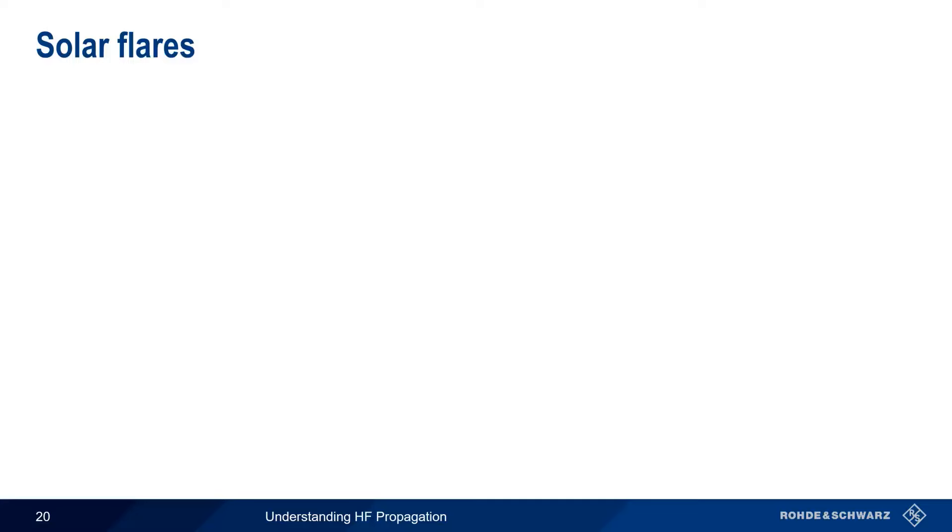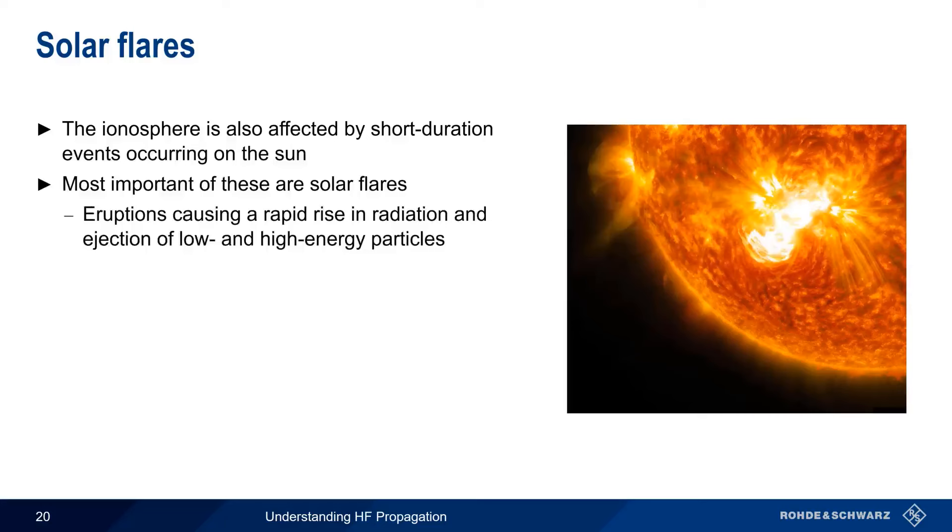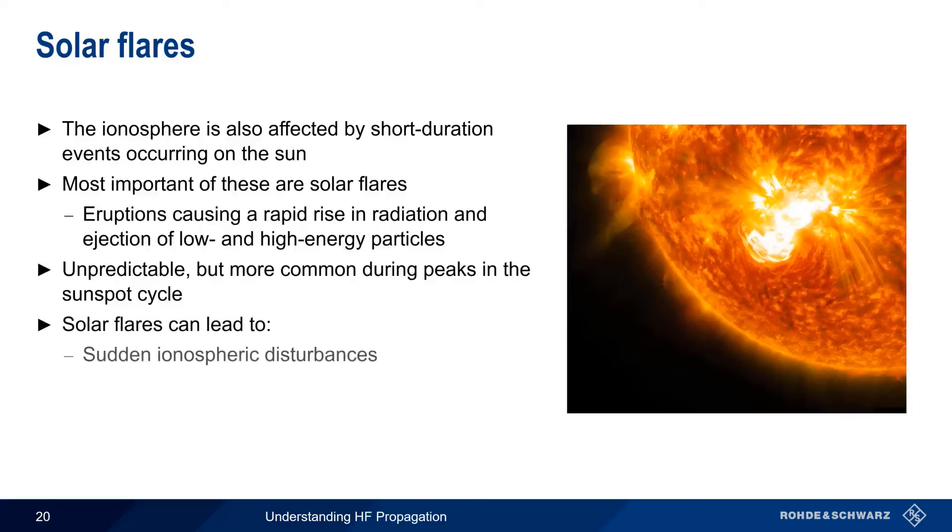Sunspot number and solar flux index are valuable measures of longer-term variations in solar radiation. The ionosphere is also affected by shorter duration events occurring on the sun. The most important of these are solar flares, which are a type of eruption on the surface of the sun. Solar flares cause a rapid rise in both X-ray and ultraviolet radiation, as well as the ejection of both low- and high-energy particles. Solar flares are essentially unpredictable, but they do occur more commonly during peaks in the 11-year sunspot cycle. Solar flares have a significant effect on HF propagation, because they can lead to sudden ionospheric disturbances, polar cap absorption, as well as both geomagnetic and ionospheric storms.